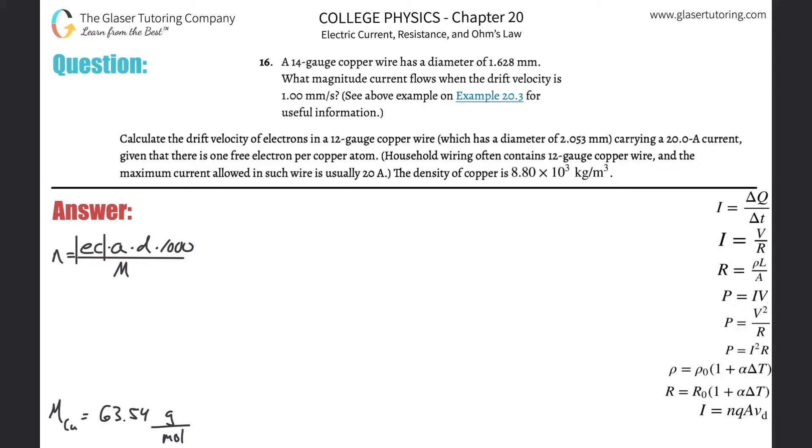Number 16, a 14 gauge copper wire has a diameter of 1.628 millimeters. What magnitude of current flows when the drift velocity is one millimeter per second? Alright, so we're going to reference this problem, and we've seen this now two other times, so I'm going to run through this.